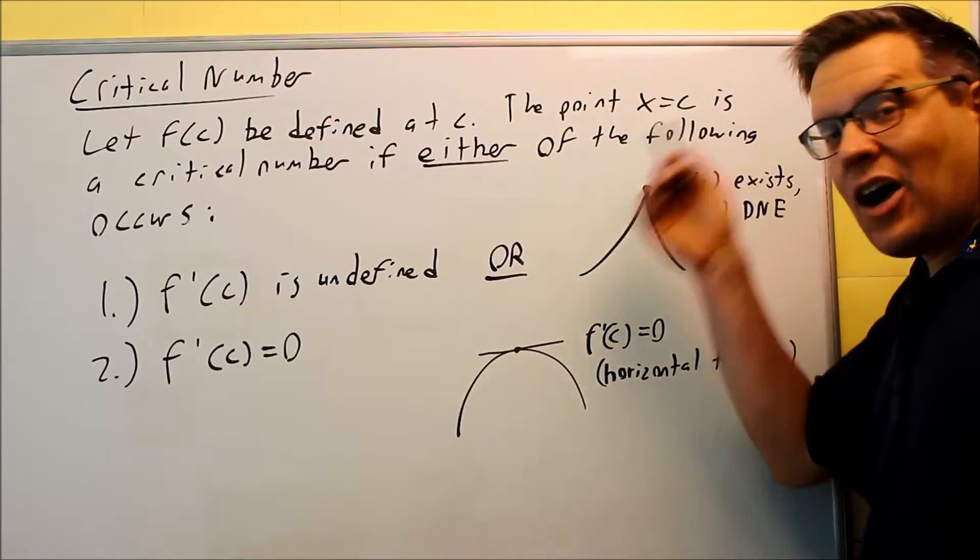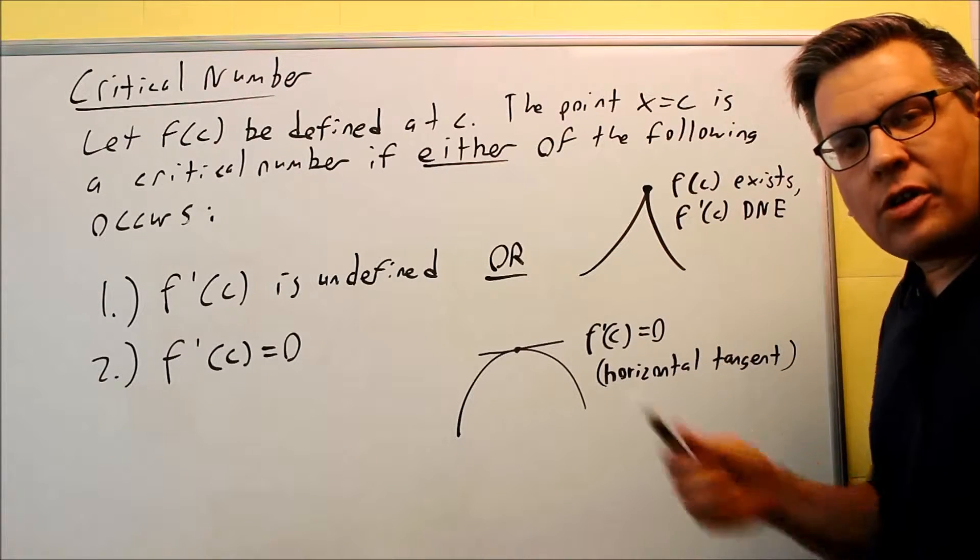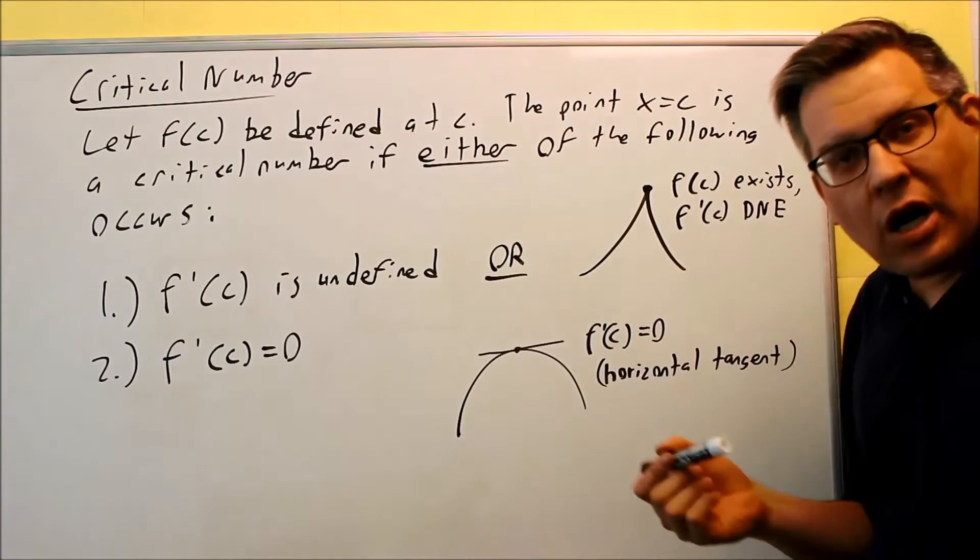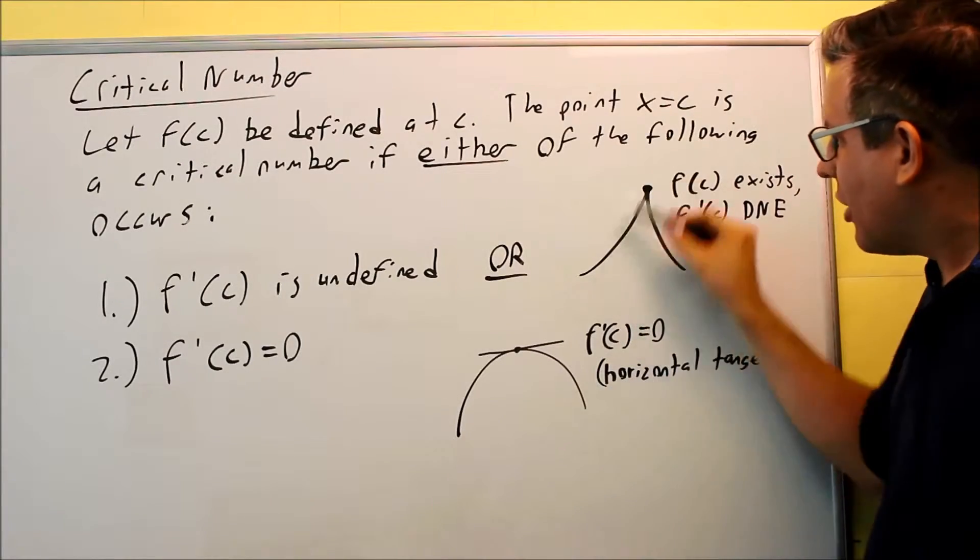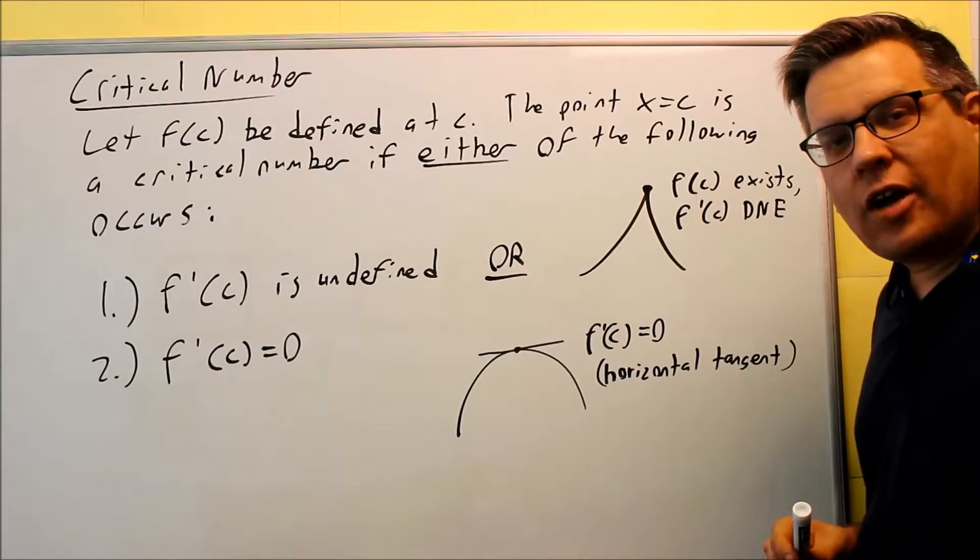If you're wondering how that can possibly occur, then take a look at the next part of this video. I'm going to go through finding the derivative using the limit process with absolute value. Absolute value has a point like this and you'll see why it's possible for the derivative to be undefined.